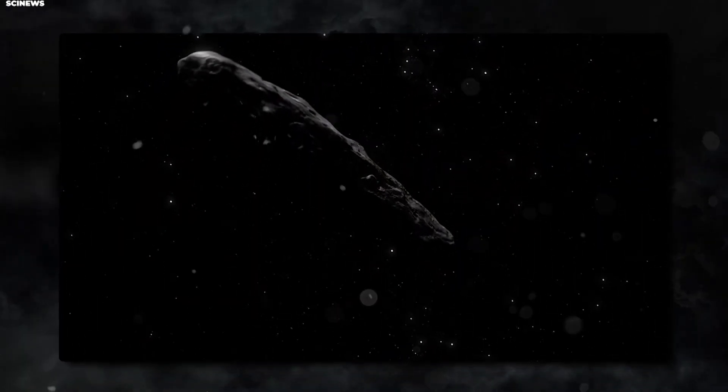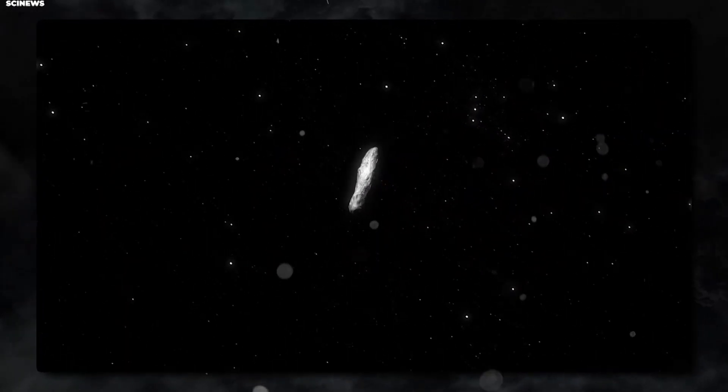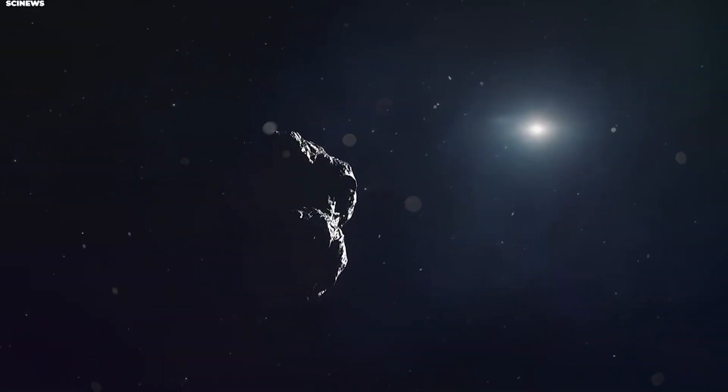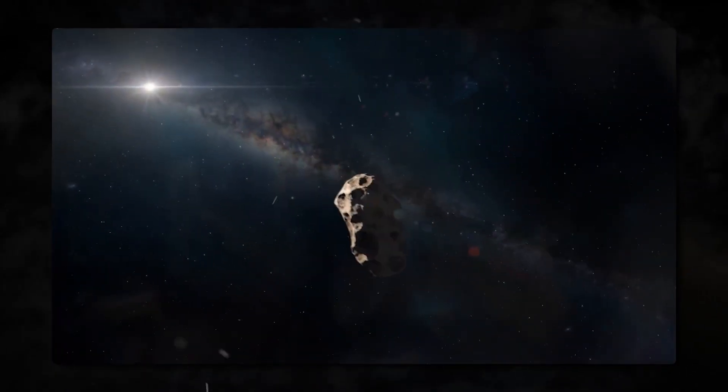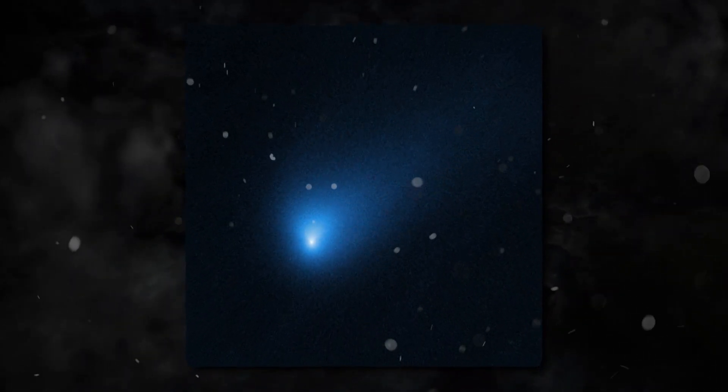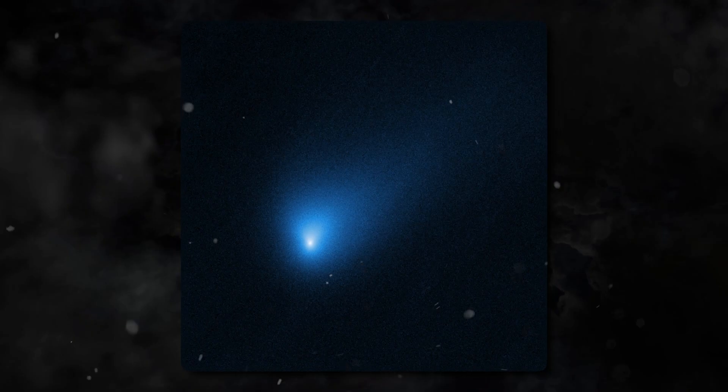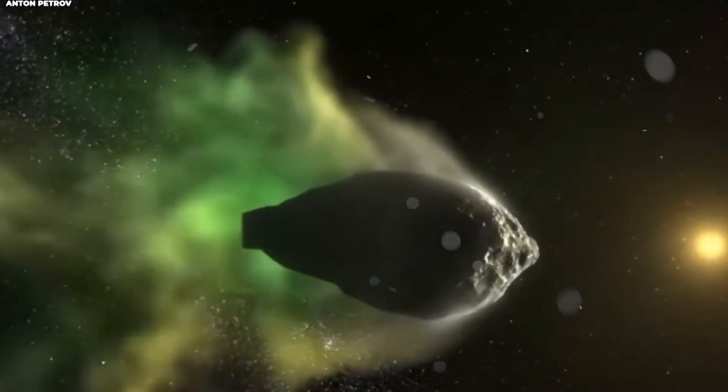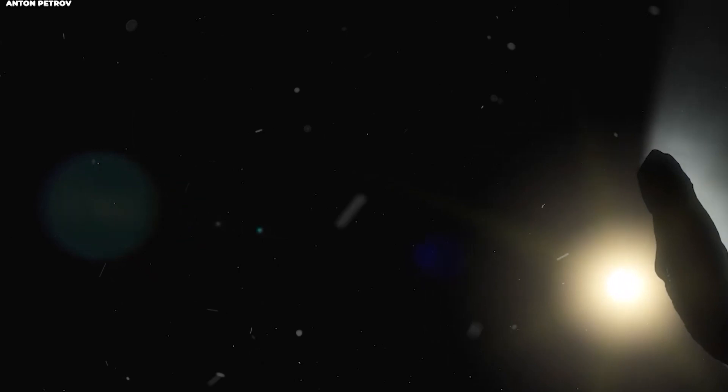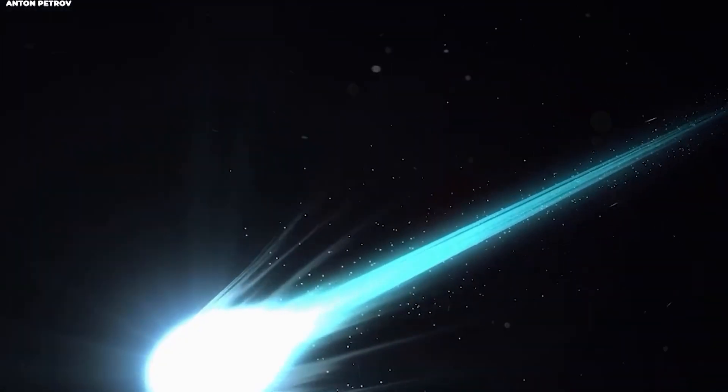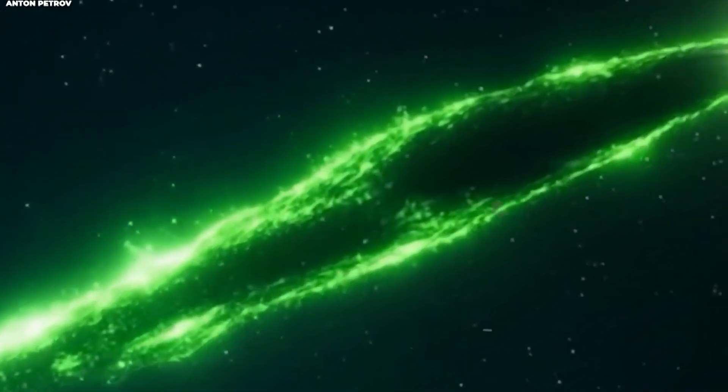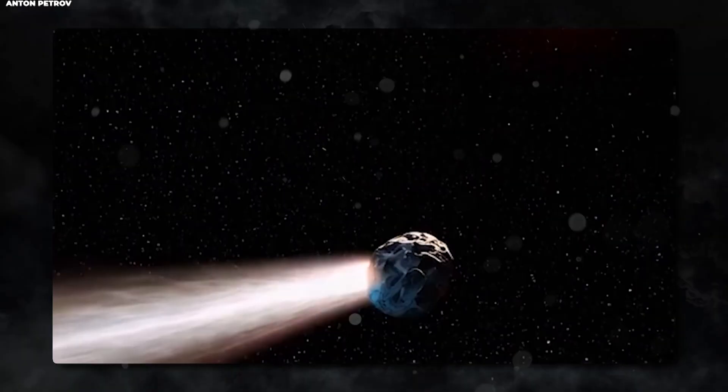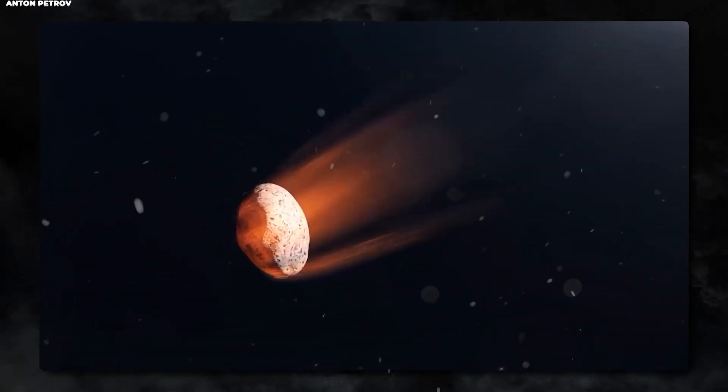The first was 1I/Oumuamua in 2017, and the second was 2I/Borisov in 2019. There's also been discussion about potential interstellar meteors and other candidates. What NASA's instruments captured while studying these objects, particularly Borisov, challenged fundamental assumptions about what exists in interstellar space. So what did they actually see? What made scientists stop in their tracks and reconsider decades of astronomical theory? Let's break this down step by step because the real story is absolutely mind-blowing.